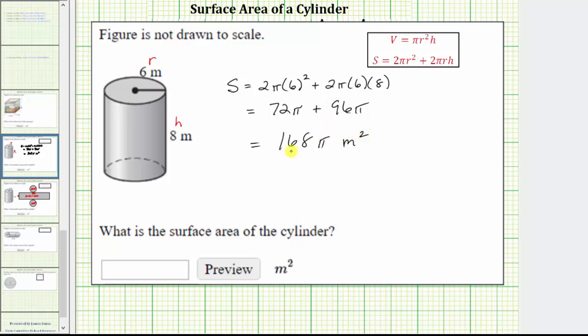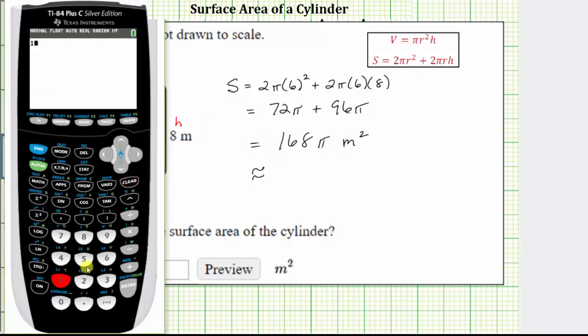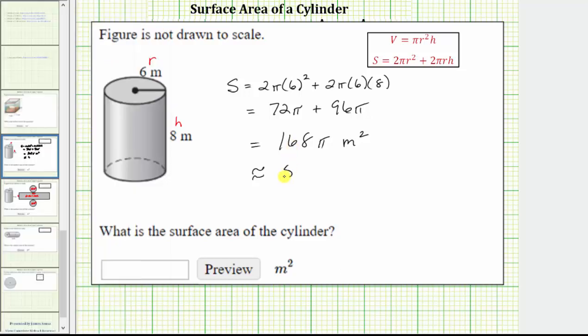So this is the exact surface area of the cylinder. Let's also use our calculator and get our decimal approximation. We enter 168π, the π key is second, and then the exponent key. Then we press enter. If you round to two decimal places, notice how there's a 7 in the thousandths place value, which means you round up the surface area is approximately 527.79 square meters. I hope you found this helpful.